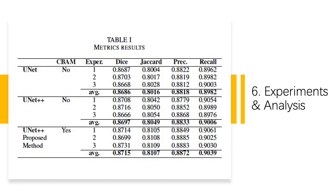As shown in the table, we conducted three different experiments to assess the model's performance. In each experiment, we trained the model three times to obtain an average of the metric data, and all architecture models were trained with the same dataset. In the first experiment, we used the base architecture model UNet without CBAM. Next, we used UNet++ without CBAM. Finally, we used both UNet++ and CBAM. In this table, we can see that the values of the four evaluation indicators of the proposed method are all better than the other two network models.